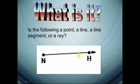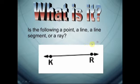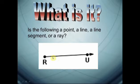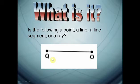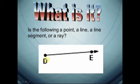And this is a ray — ray NH. This is a line KR. This one is a ray RU. And this is point O. This is line segment QO. And ray DE.